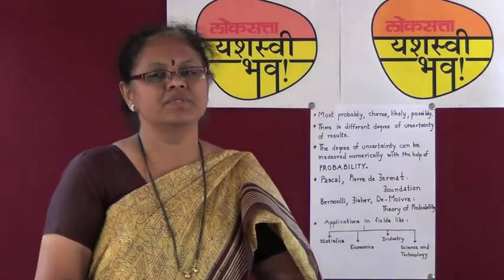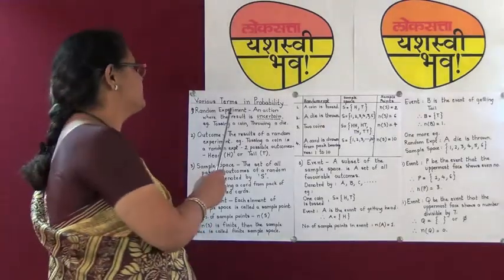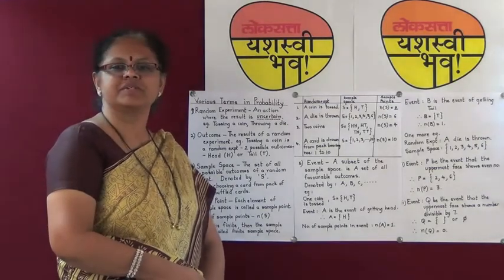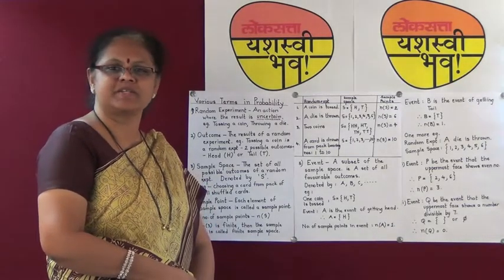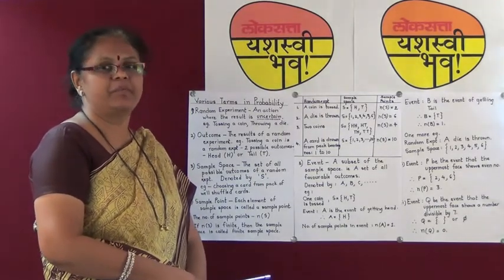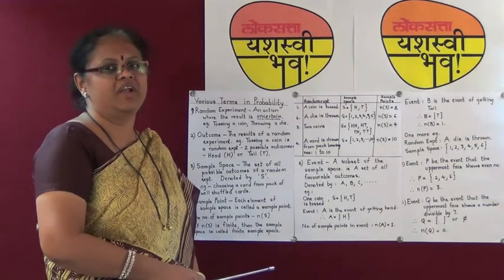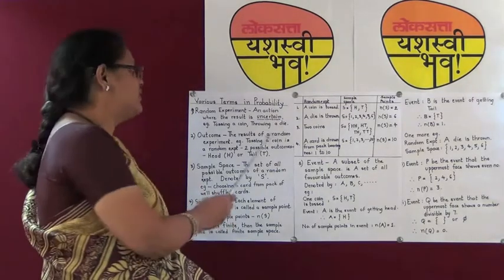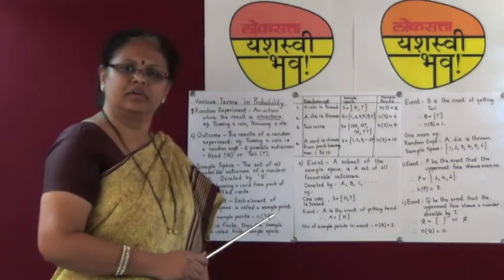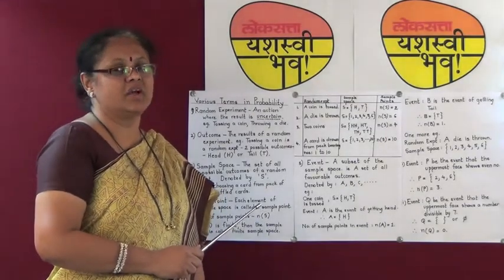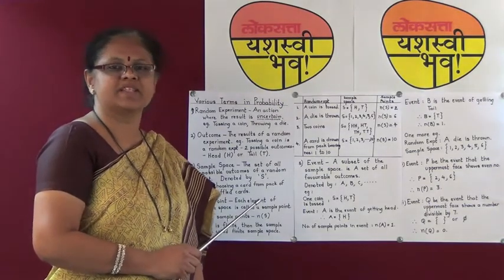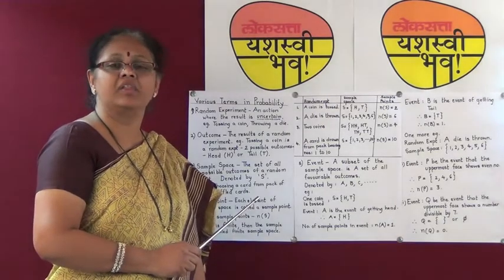Now let us understand the terms in probability. The first term is random experiment. Often you must have gone to the laboratory to perform various experiments — for example, preparing gas in the laboratory. When we prepare gas in the laboratory, we know we have a definite result. But in case of a random experiment, it is an action where the result is uncertain. We can give the example of either tossing a coin or throwing a die. In these experiments, we know that the results are not certain.